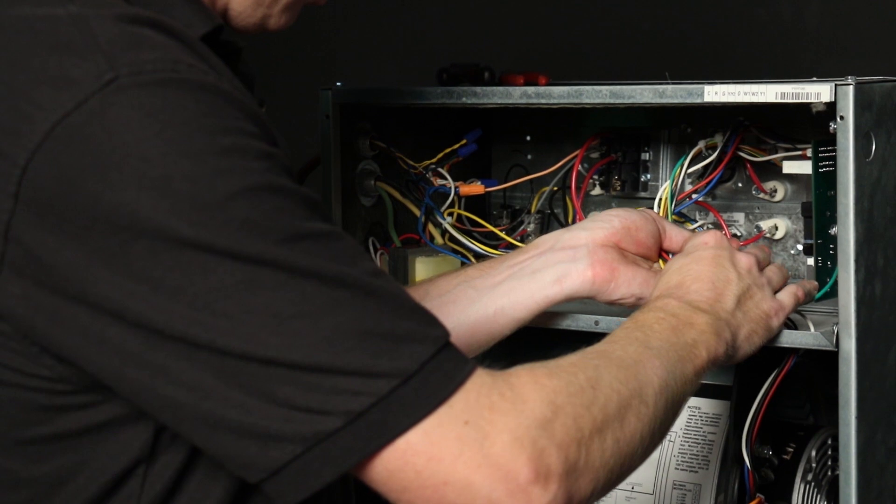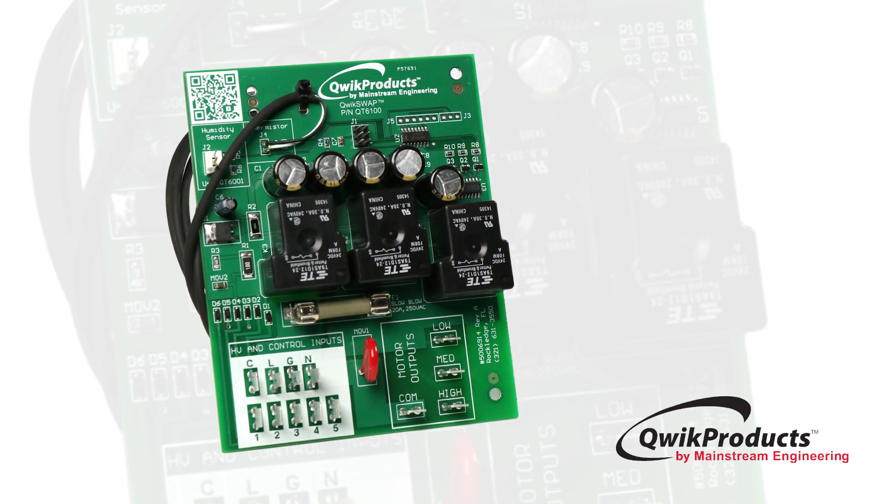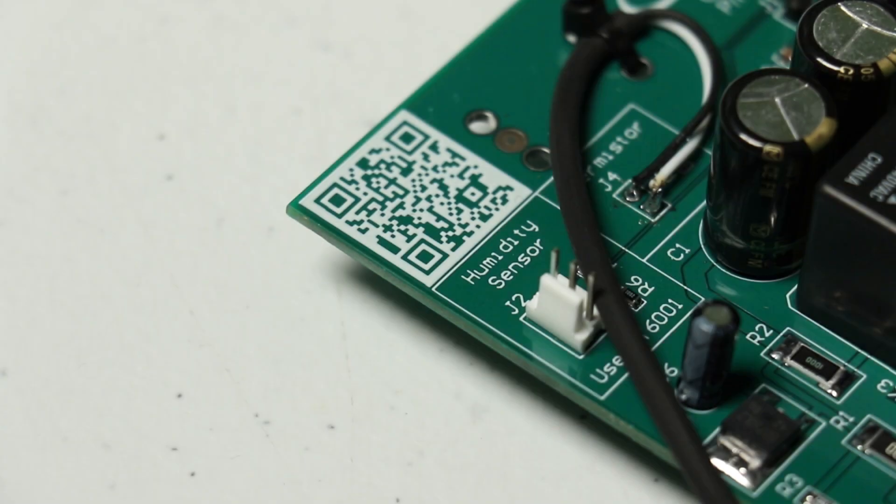To wrap up the installation, bundle any excess wires to avoid interference with the blower. The quick swap board will now automatically select the correct blower speed that will optimize your system's efficiency. For additional information, scan the QR code on the quick swap board or visit quick.com.